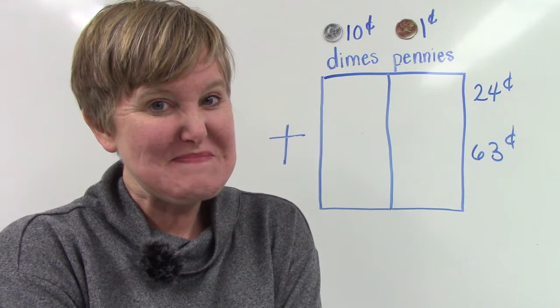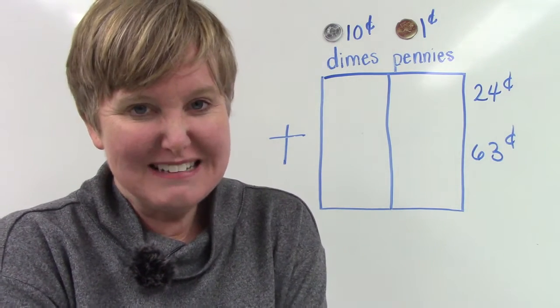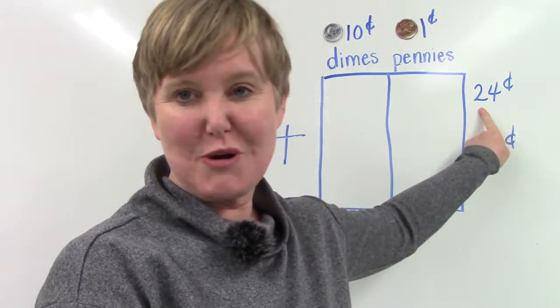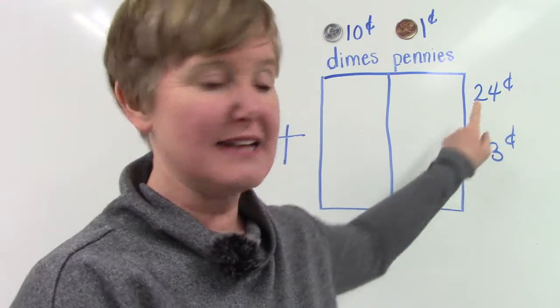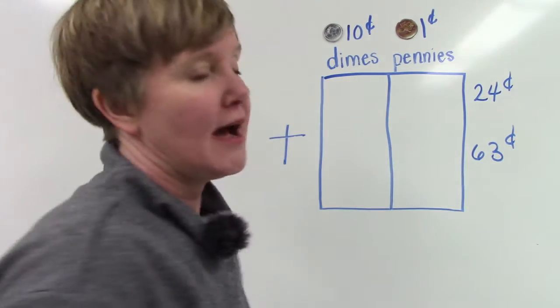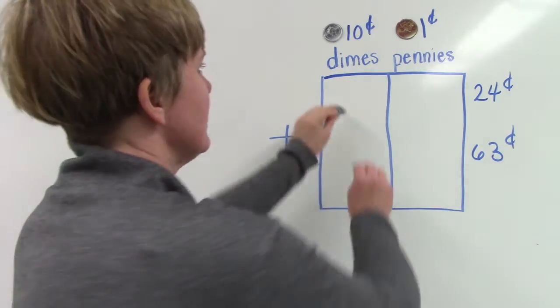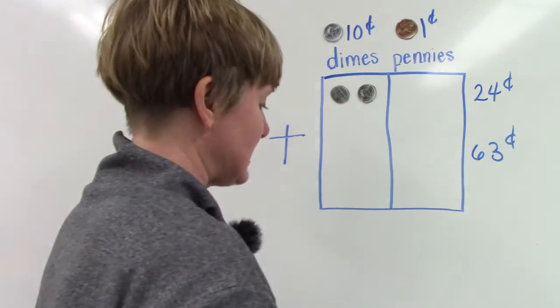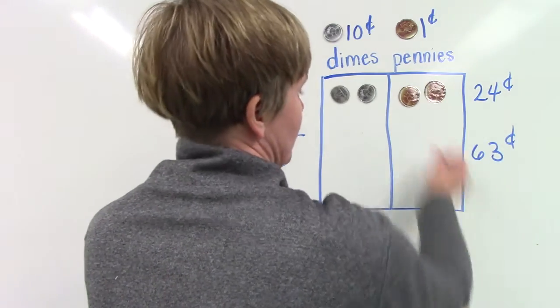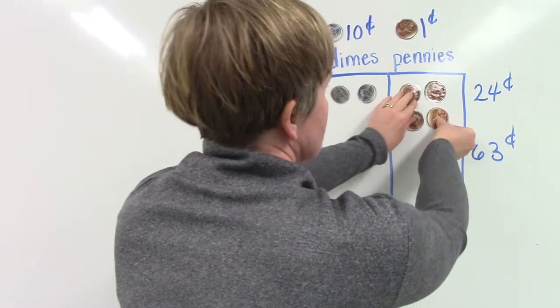We are going to put 24 cents on our little graph. I'm going to use two dimes to show the 20 in 24 and then I'm going to put four pennies to show 24.